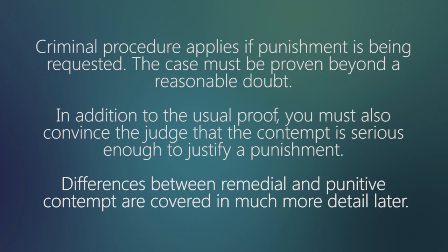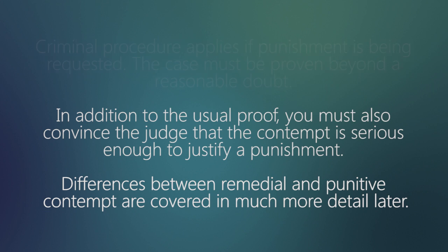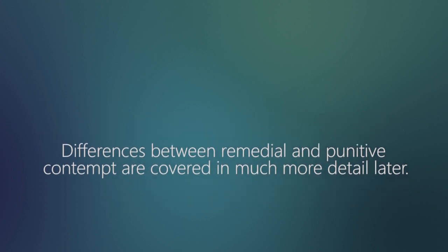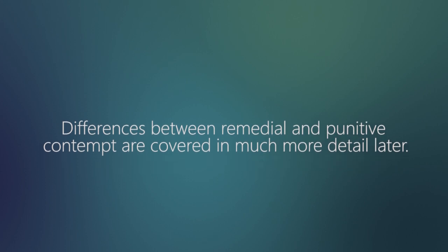Criminal procedure applies if punishment is being requested — the case must be proven beyond a reasonable doubt. In addition to the usual proof, you must also convince the judge that the contempt is serious enough to justify a punishment. Differences between remedial and punitive contempt are covered in much more detail later.